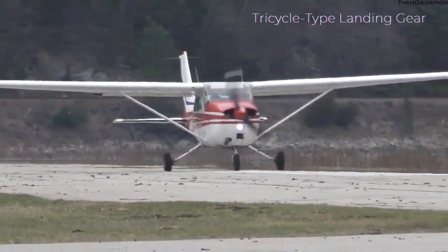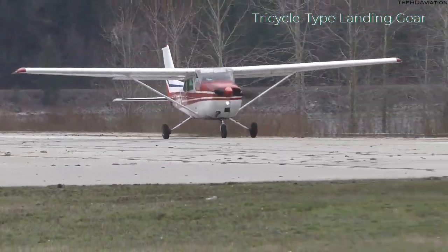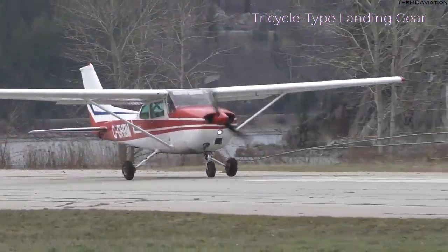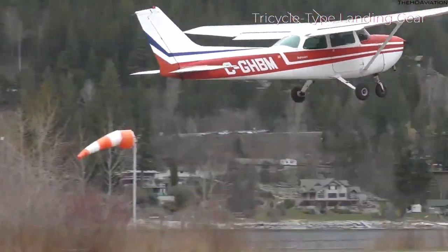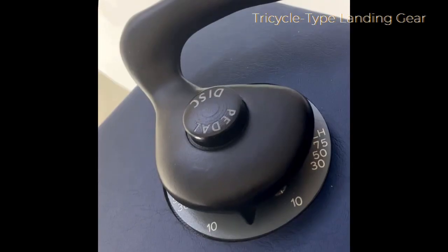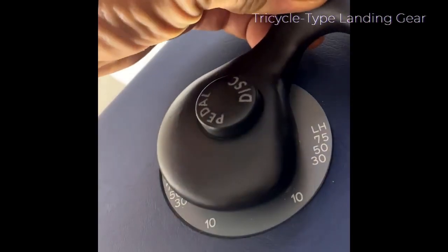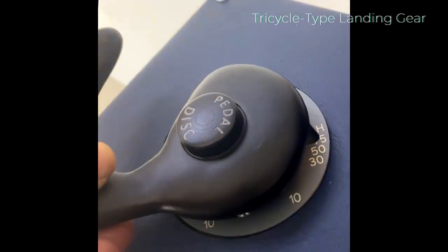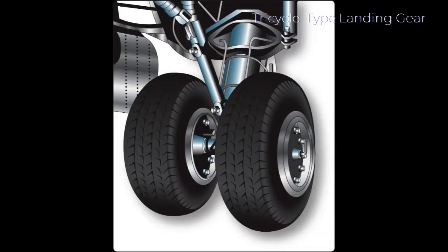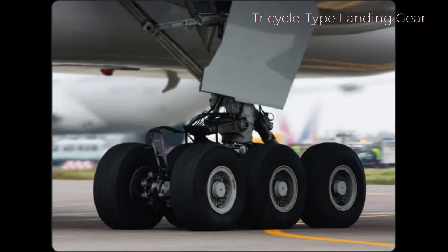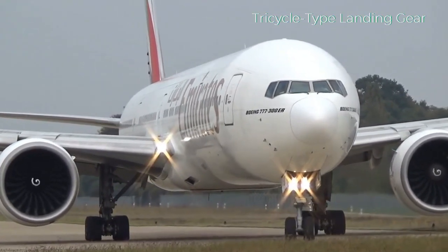The nose gear of a few aircraft with tricycle type landing gear is not controllable — it simply casters, with steering accomplished through differential braking during taxi. However, nearly all aircraft have steerable nose gear. On light aircraft, the nose gear is directed through mechanical linkage to the rudder pedals. Heavy aircraft typically utilize hydraulic power to steer the nose gear, with control achieved through an independent tiller in the flight deck. The main gear is attached to reinforced wing or fuselage structure, and many main gear have two or more wheels to spread aircraft weight over a larger area and provide a safety margin should one tire fail. Heavy aircraft may use four or more wheel assemblies on each main gear.